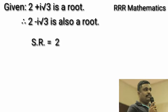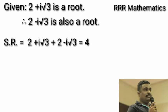Find sum of the root: 2 plus i root 3 plus 2 minus i root 3. i root 3 and i root 3 get cancelled. It gives 2 plus 2 as 4.